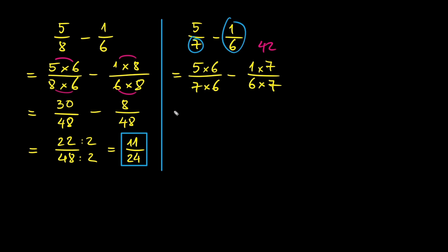Now, let's multiply. 5 times 6 is 30. 7 times 6 is 42. 1 times 7 is 7. 6 times 7 is 42.